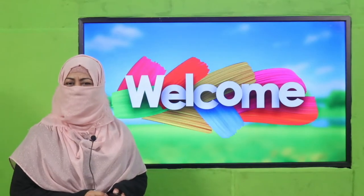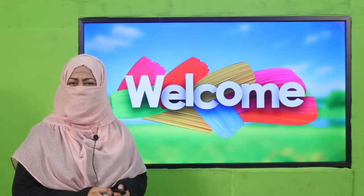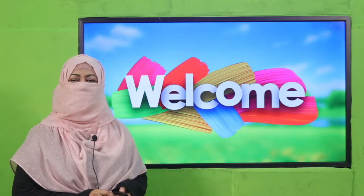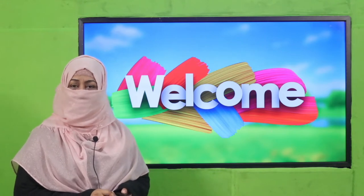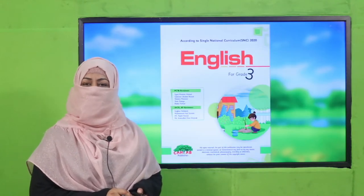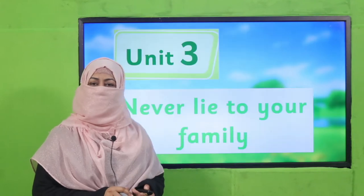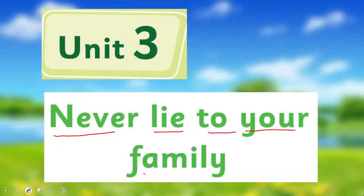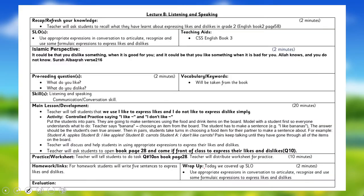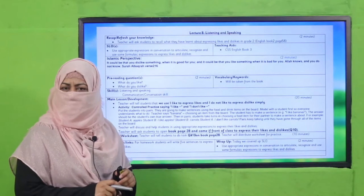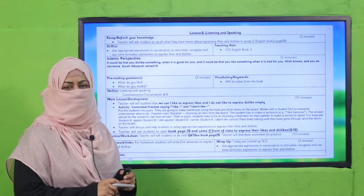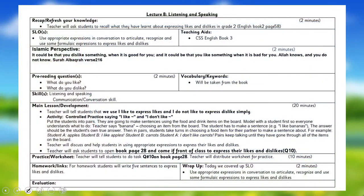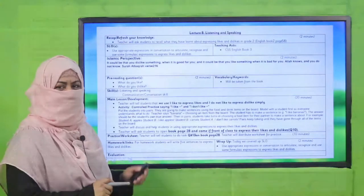Bismillahirrahmanirrahim. Assalamu alaikum, my dear students. How are you? I hope you're enjoying the best of health. I welcome you to my class — English for Grade 3. We are learning Unit 3, its title is 'Never Lie to Your Family.' My dear fellow teachers, this lesson plan, PowerPoint presentation, and worksheet links are given — you may click it, download it, and follow it as is, all modified for your convenience.